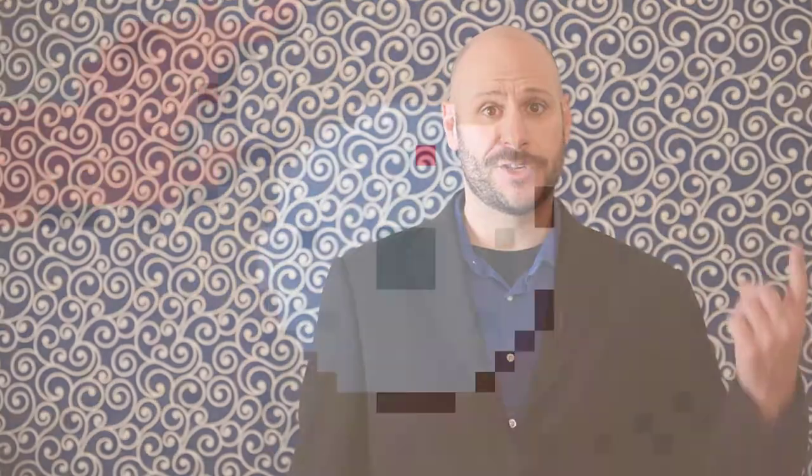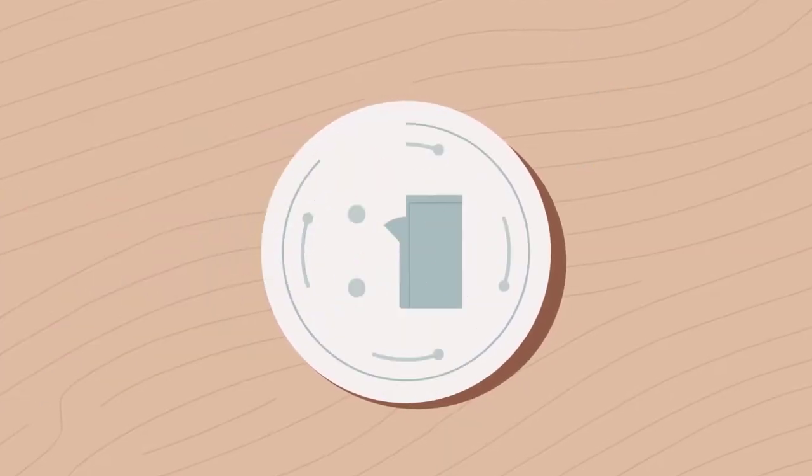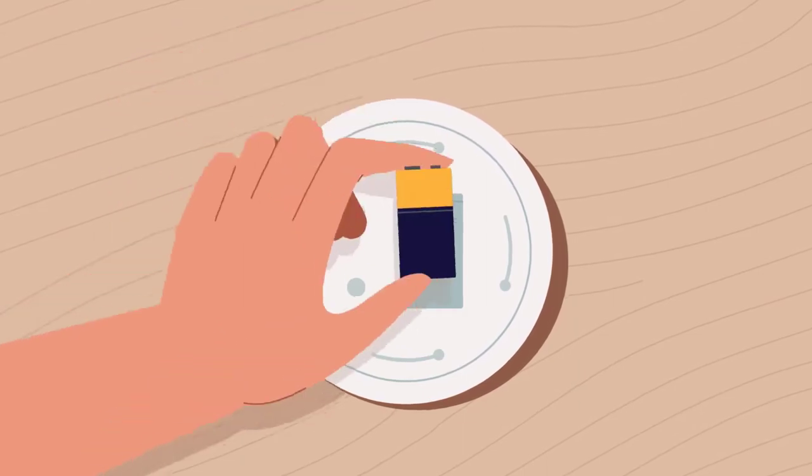Regardless of the lighting setup you opt for, make sure to avoid standing with a bright light directly behind you — otherwise you will be very difficult to see. Once you have your lighting dialed in, you should turn your focus to acoustics. First, make sure to eliminate any obvious sources of noise. Silence phones, turn off TVs, and make sure your smoke alarms have fresh batteries and are not chirping every 60 seconds.